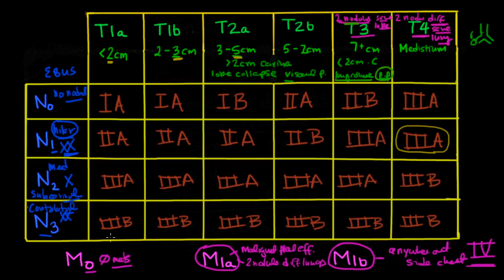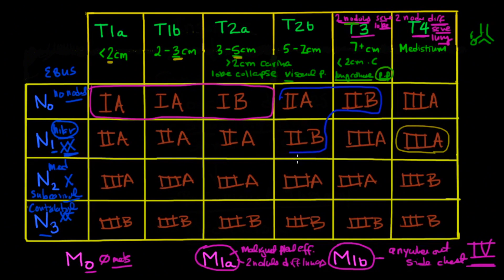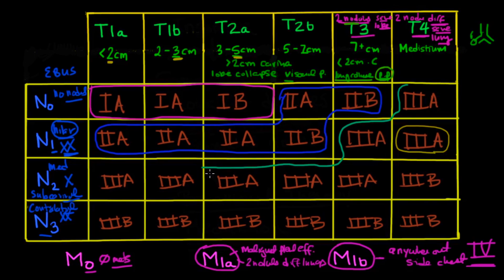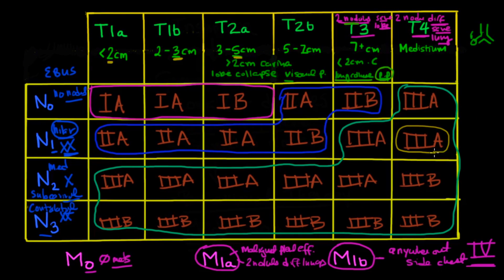The last stage is 3B — the easiest to remember because they're all 3Bs. Now, even though there's a 1A and a 1B, they are treated differently and have different prognoses. Finally, the M number gives you a stage 4.